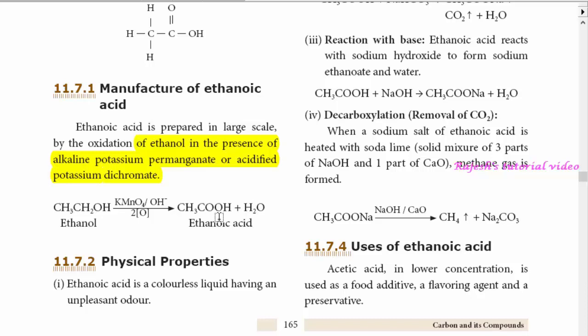Ethanoic acid is manufactured on a large scale by this process. Coming to the physical properties of ethanoic acid, it is a colorless liquid having an unpleasant smell.